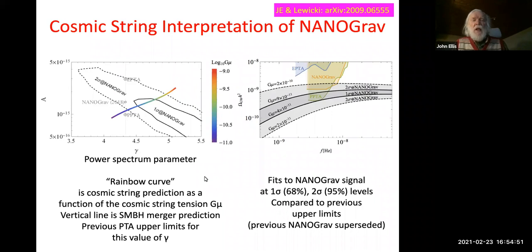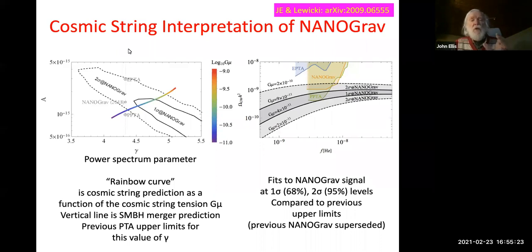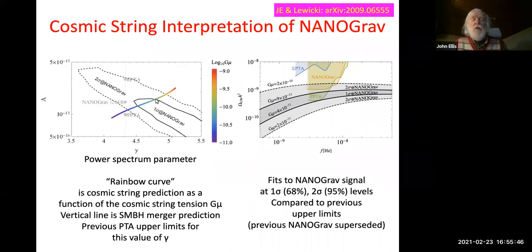Together with Marek Lewicki, towards the end of last year we did an analysis of what you might expect from cosmic strings. The interesting thing is that you get a correlation between the power spectrum parameter γ and the amplitude parameter A. The vertical line corresponding to the supermassive black hole merger prediction sits at γ = 4⅓, and the NanoGrav data show a tendency to prefer a higher value of the spectral parameter — our cosmic string prediction is totally consistent with what NanoGrav is seeing. The NanoGrav data would correspond to cosmic strings with a tension of 10⁻¹⁰ or a few times 10⁻¹¹, very close to previously set upper limits but compatible with previous data.